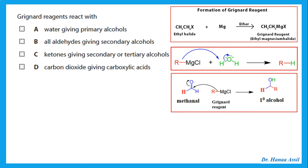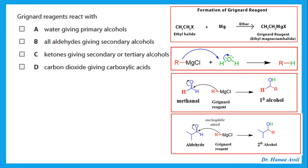What if we react the Grignard reagent with aldehydes? That depends on which type of aldehyde. If we use methanal, it gives a primary alcohol with the Grignard reagent. If we use a longer chain aldehyde, this gives a secondary alcohol. So when choice B says all aldehydes give secondary alcohols — no, they can give primary or secondary alcohol.